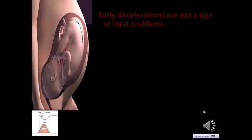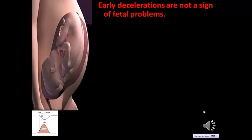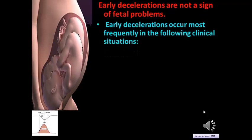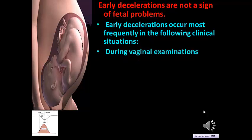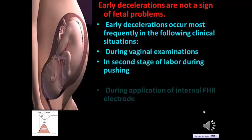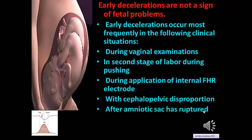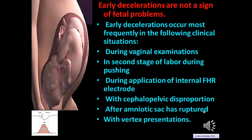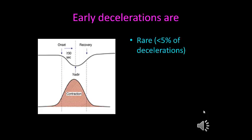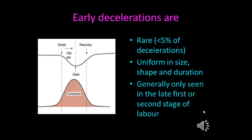Early decelerations are not a sign of fetal problems. They occur most frequently during vaginal examination, in the second stage of labor during pushing, during application of internal fetal heart rate electrode, with cephalopelvic disproportion, after amniotic sac rupture, and with vertex presentation. Early decelerations are rare — less than 5% of all decelerations — are uniform in size, shape, and duration, are generally only seen in the late first or second stage of labor, and are a mirror image of the contraction.